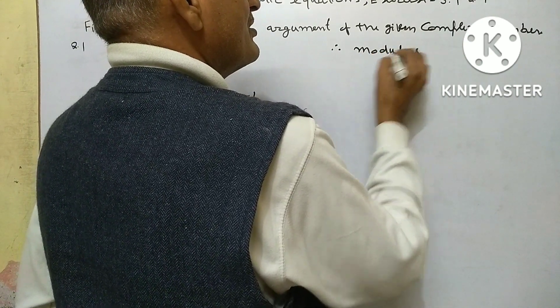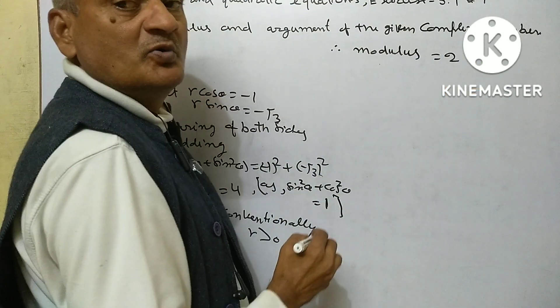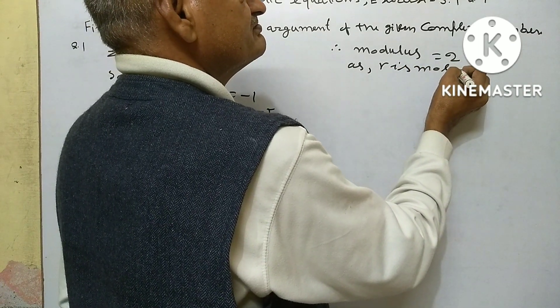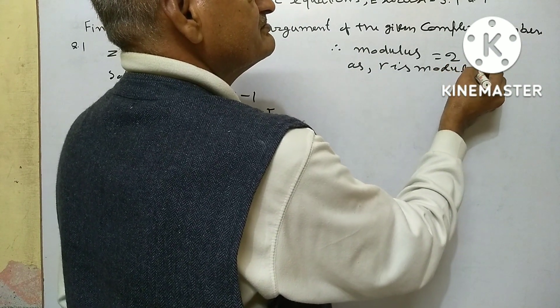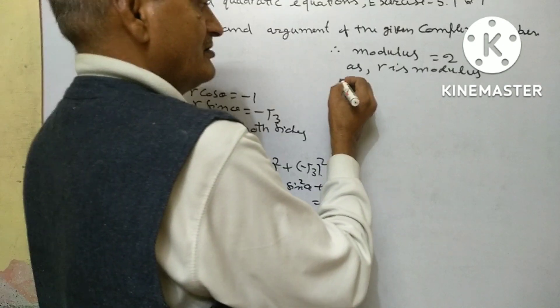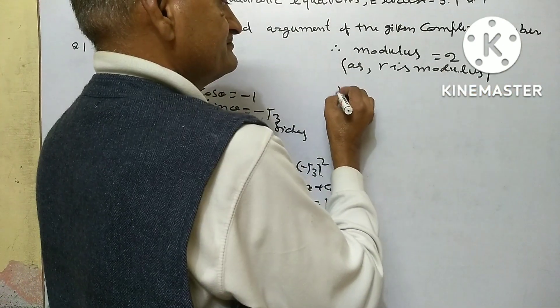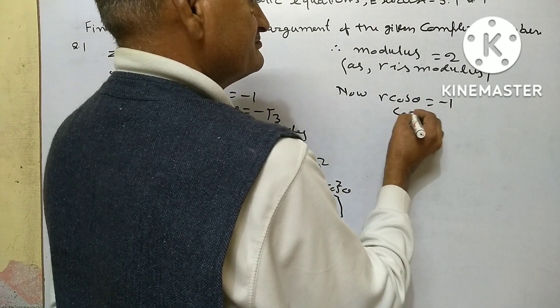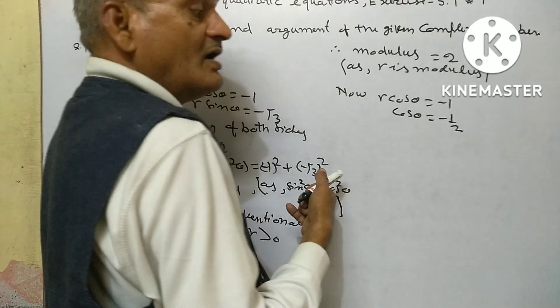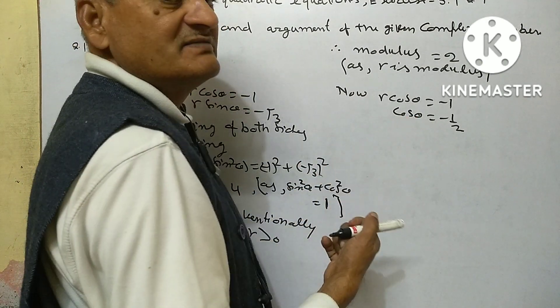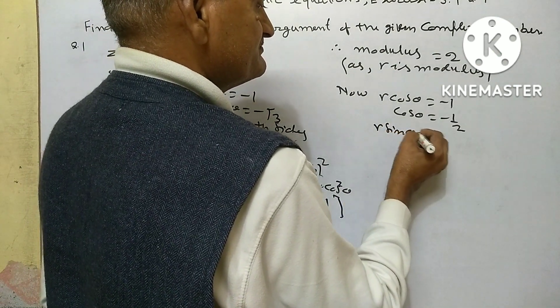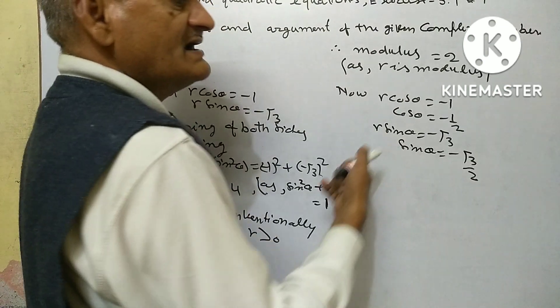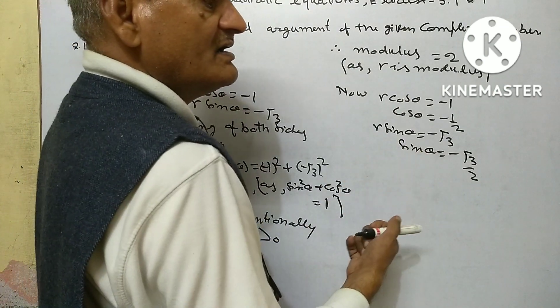Therefore, modulus equal 2. r is modulus. Now r cos theta equal minus 1, cos theta equal minus 1 upon 2. r sin theta equal minus root 3, sin theta equal minus root 3 upon 2.